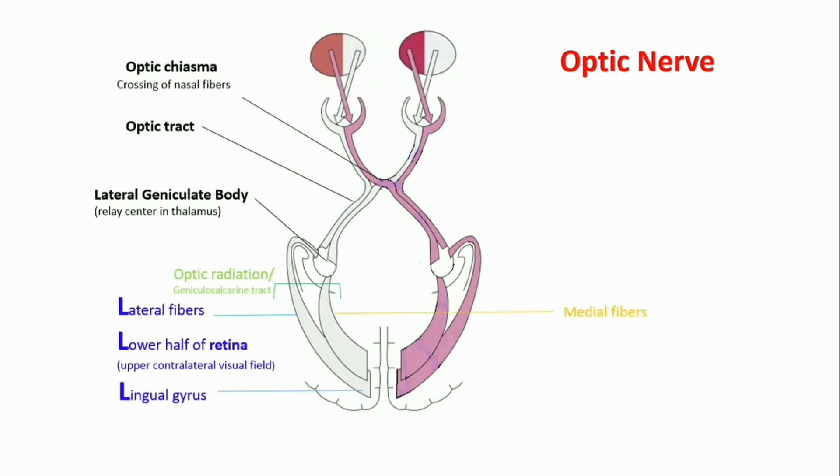Medial fibers end up in cuneus gyrus and represent upper halves of retina or lower contralateral visual field. Both gyri are parts of visual cortex located in occipital lobe.